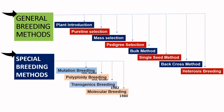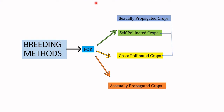Breeding methods can be classified into two broad categories: general breeding methods and special breeding methods. Under general breeding methods we have the conventional breeding methods, which were discovered well before the special breeding methods. The special breeding methods are known as advanced methods of plant breeding, discovered in more recent history. We will classify and discuss them one by one based on the mode of propagation and mode of pollination. Crop plants can be classified into sexually propagated and asexually propagated crop plants.